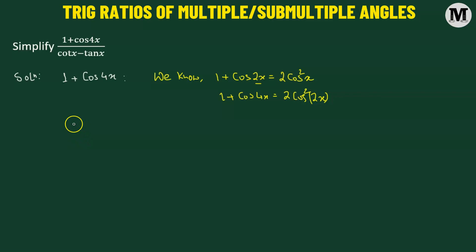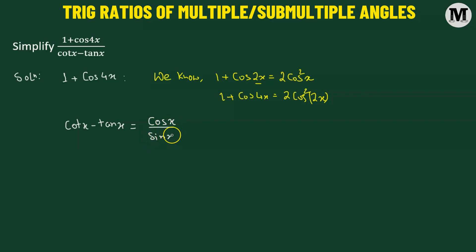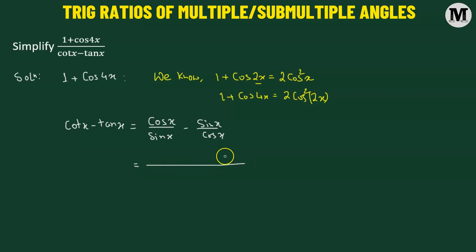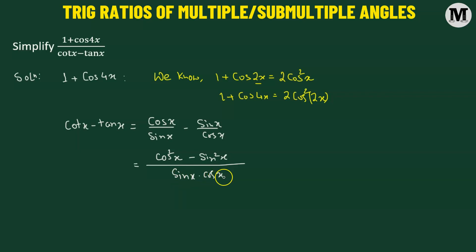Now, coming to the denominator, we have cotangent of x minus tangent of x. The cotangent function is the ratio of the cosine function to the sine function, and the tangent function is the sine function divided by the cosine function. Combining them, the numerator becomes cosine squared x minus sine squared x, and the denominator becomes sine of x times cosine of x.